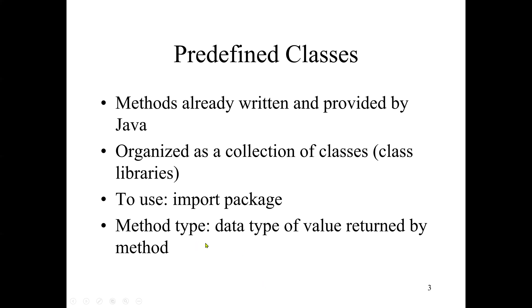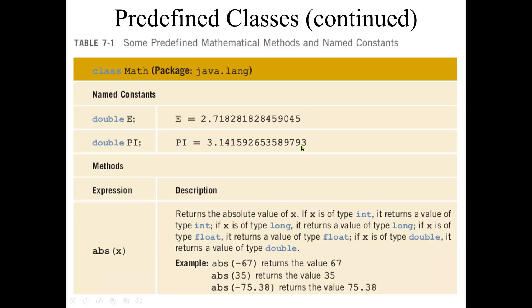The method type depends on whether the method returns a result or value. We have a returning-value method, and we also have a void method — a void method means the method doesn't return any value. We shall go through some of the predefined classes that come with Java. The java.lang package is the package we don't need to import. It consists of a few methods. First, we start with constants like Pi, and Java gives us the value of Pi. Java also gives us the exponential value.